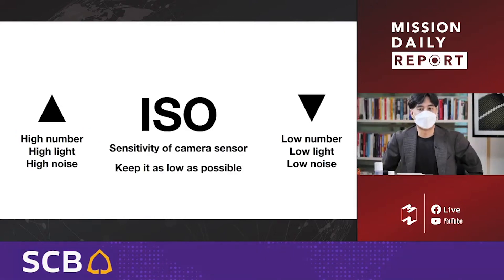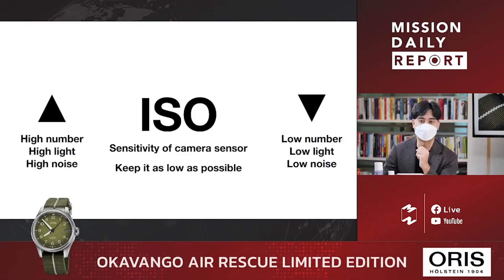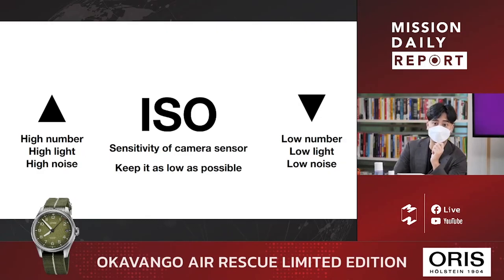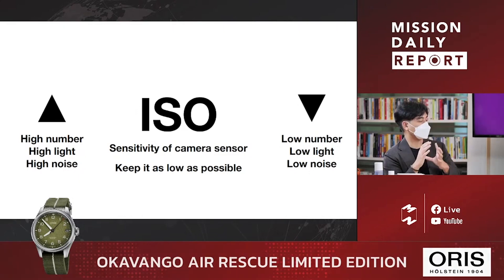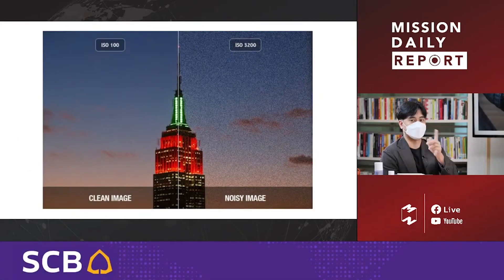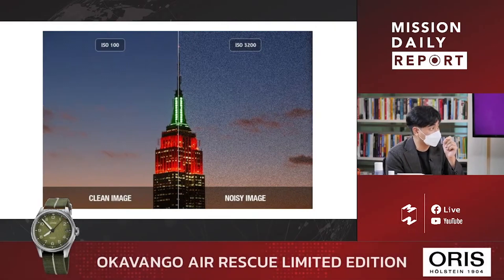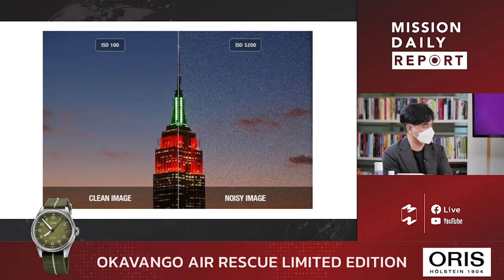The first thing I need to know is ISO. ISO is the sensitivity of the camera sensor. If the ISO is high, it doesn't show clean properties on screen. There will be a lot of noise — a lot of grain in the image.